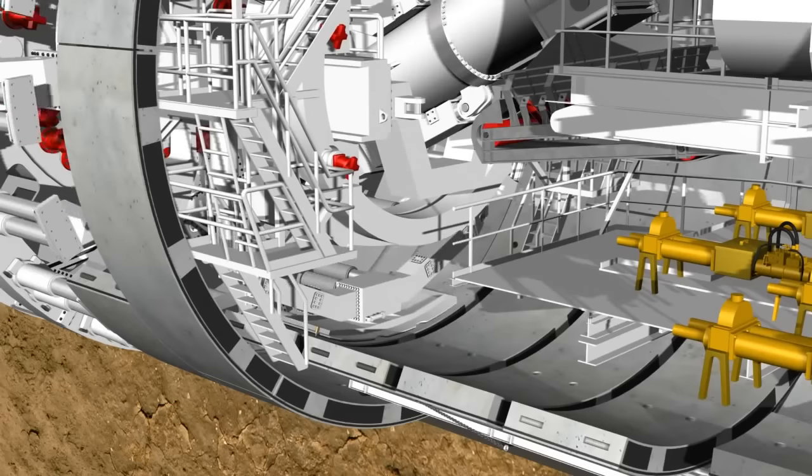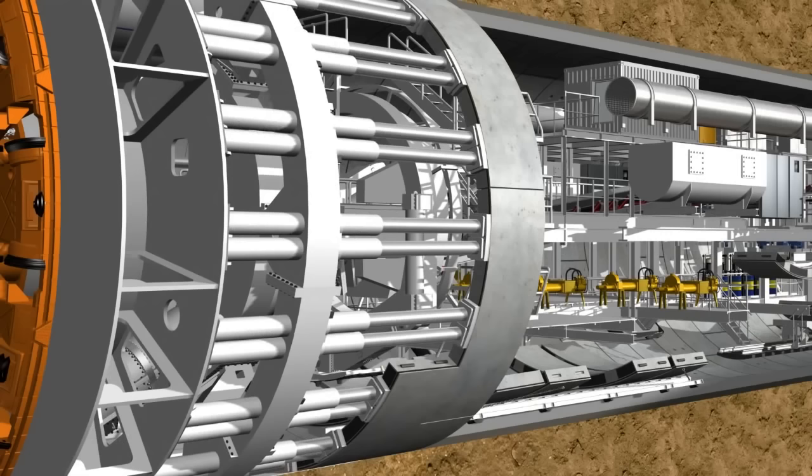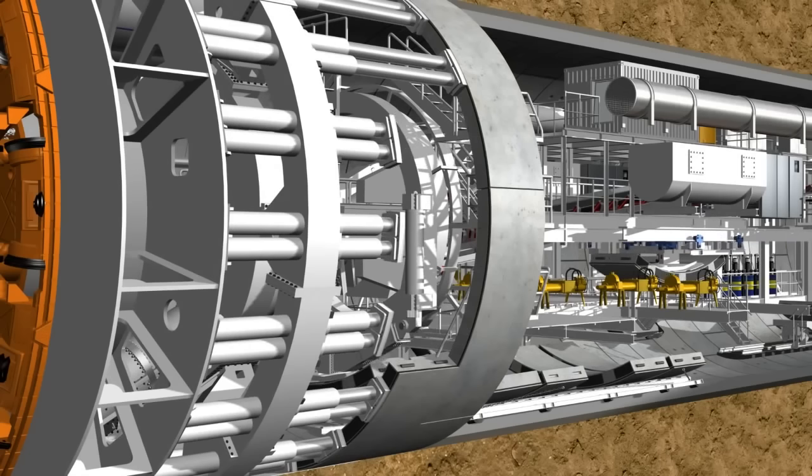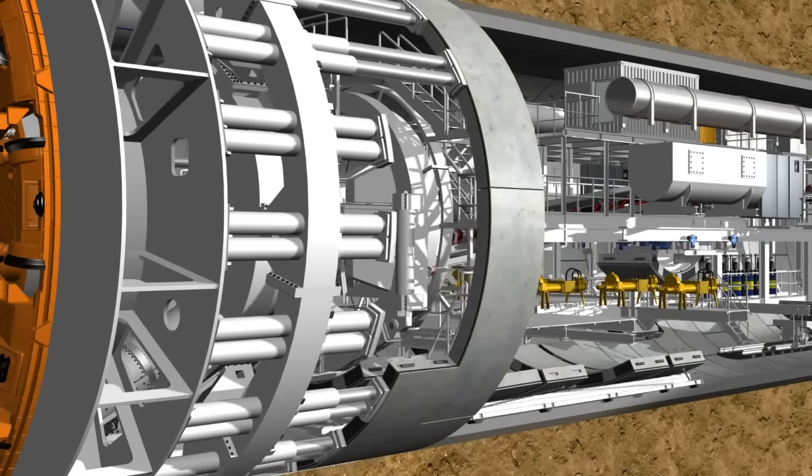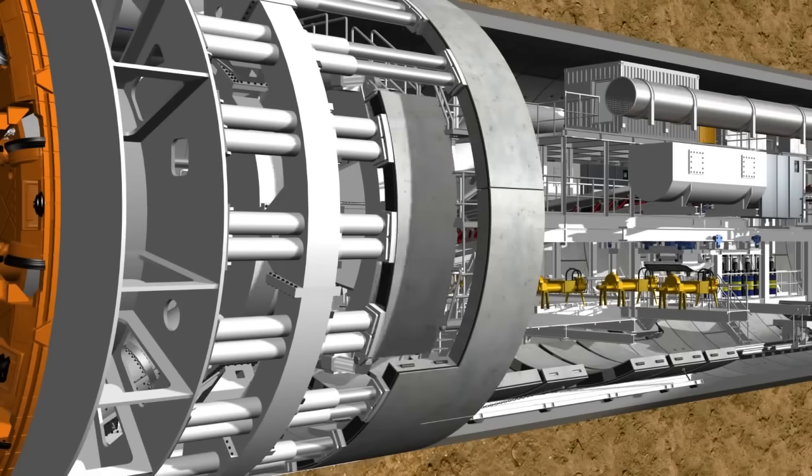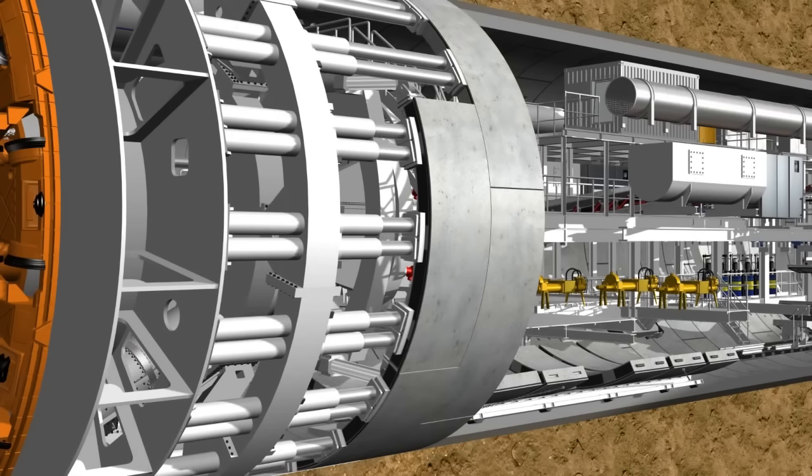The erector lifts the stone from the segment feeder. The hydraulic cylinders are then retracted from the corresponding installation point. The segment is positioned precisely, holding side contact next to the previous installed ring, using a remote control. Now, the hydraulic cylinders are extended again to secure the segment in its position, and to subsequently bolt it into the previous ring.